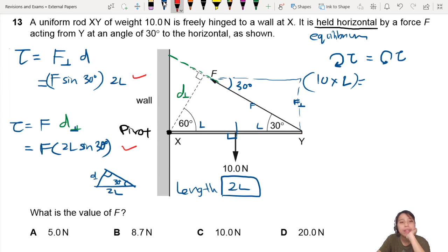F sine 30, 2L. F sine 30, 2L. F 2L sine 30. Yeah, same thing. So either method works.